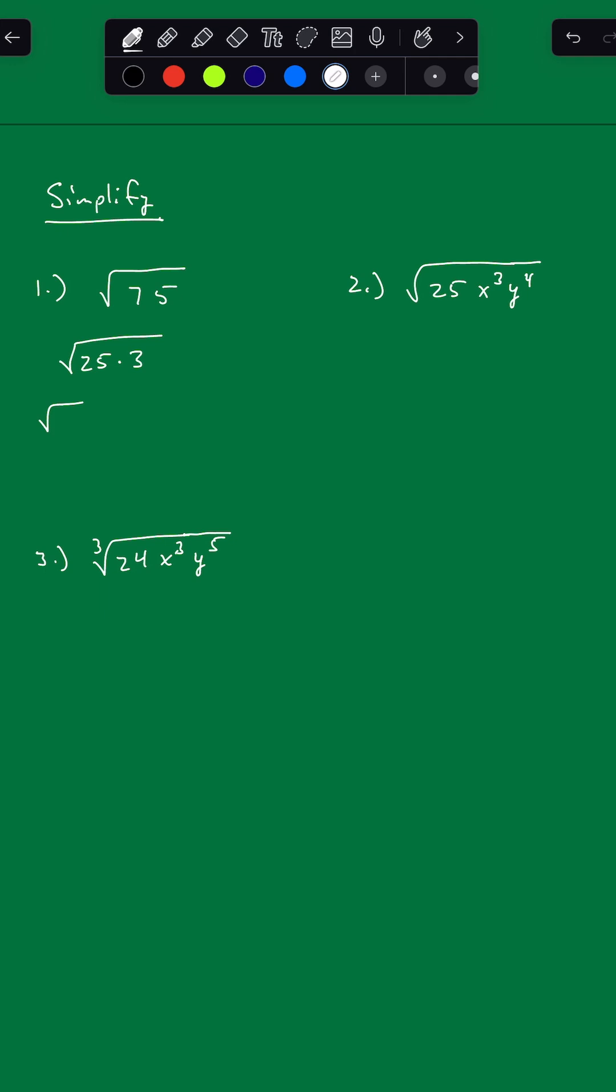25 is a perfect square. So that's square root of 25 times square root of 3. Square root of 25 is 5. Square root of 3 is not a perfect square, so it's going to stay. So we get 5 square roots of 3. Let's look at the next one.